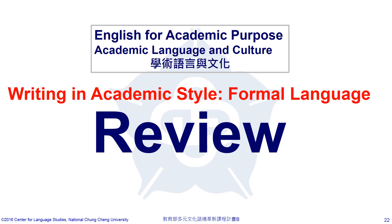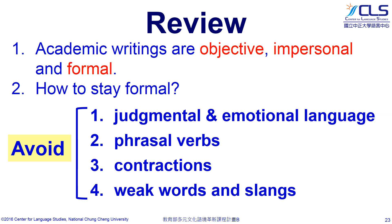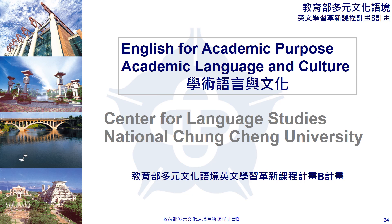Let's have a quick review of today's lesson. Academic writing should always be objective, impersonal, and formal. To stay formal, academic writing shouldn't appeal to readers' emotions. We can avoid this by eliminating judgmental and emotional language, phrasal verbs, contractions, and weak words and slangs. Thank you for joining us. This online course is funded by the Ministry of Education.